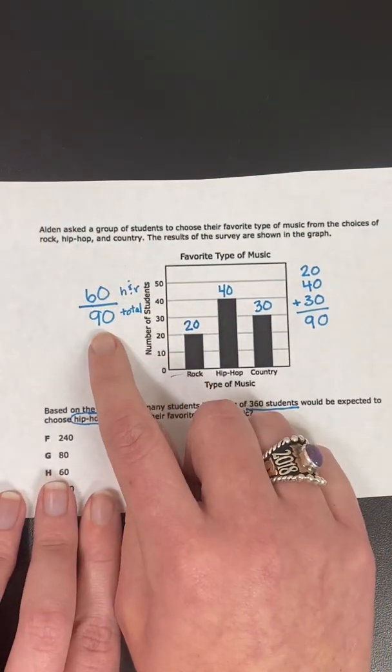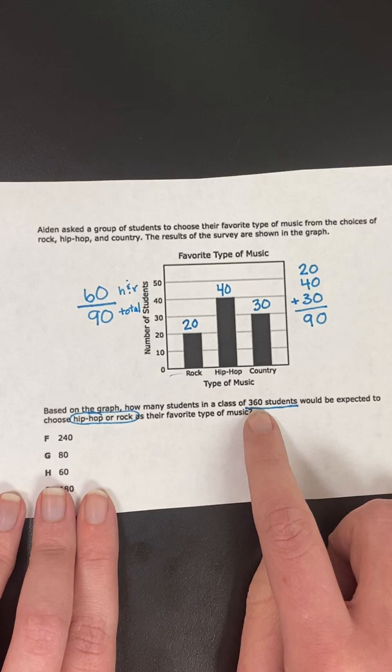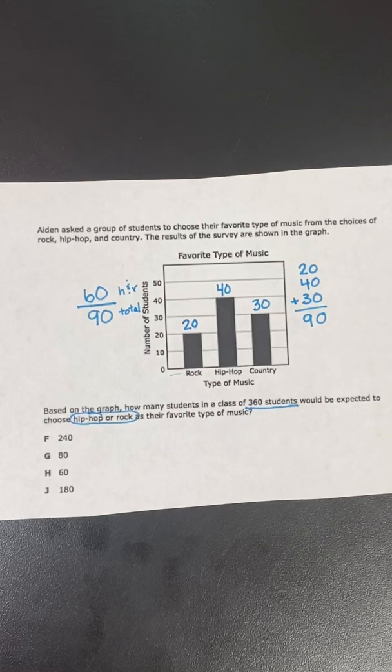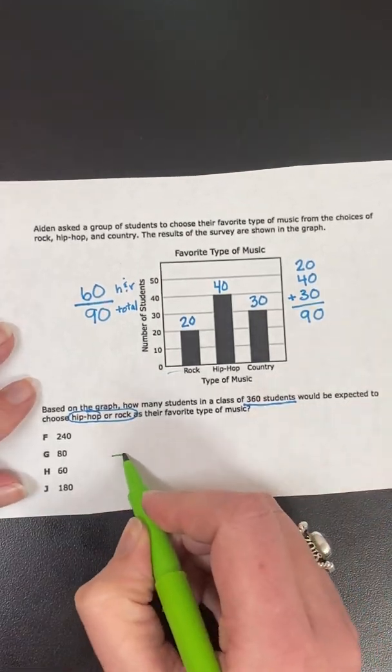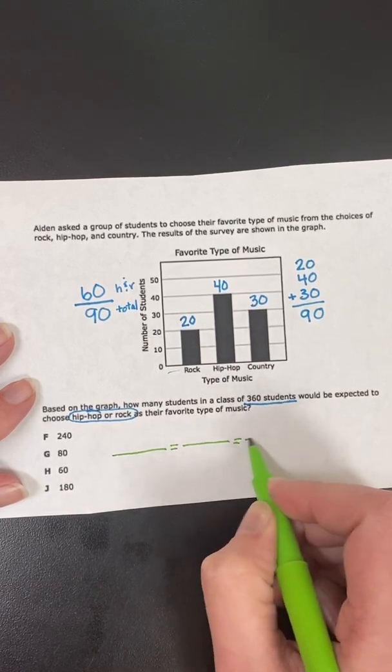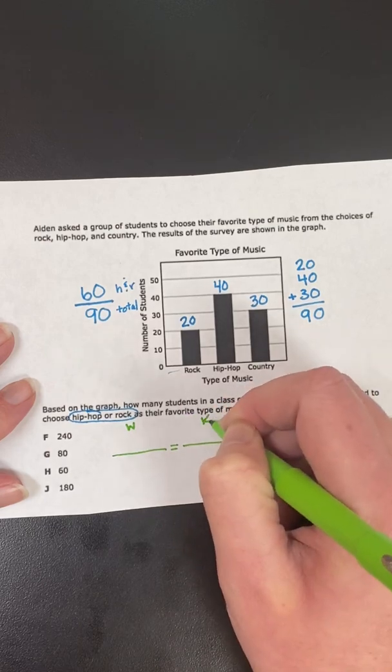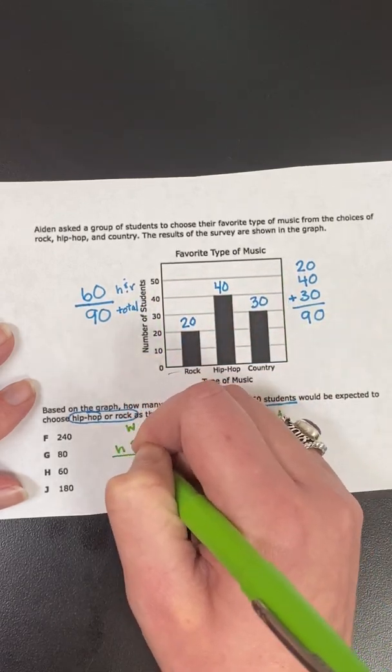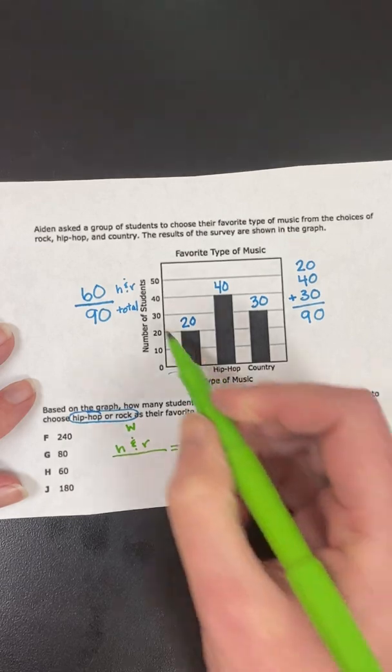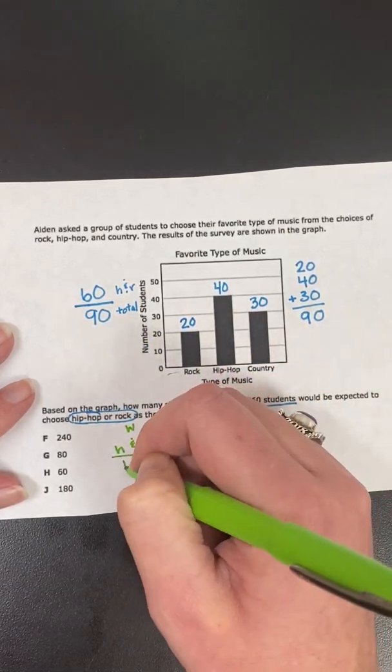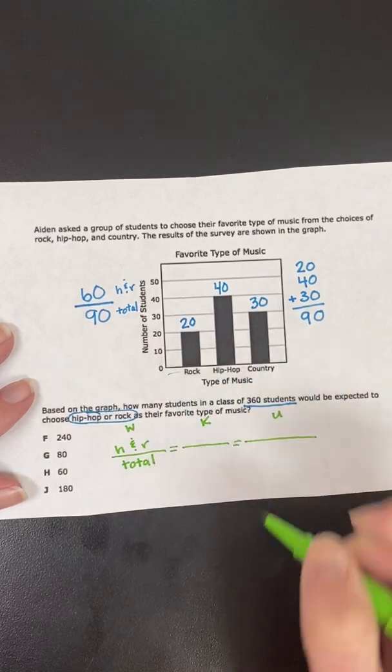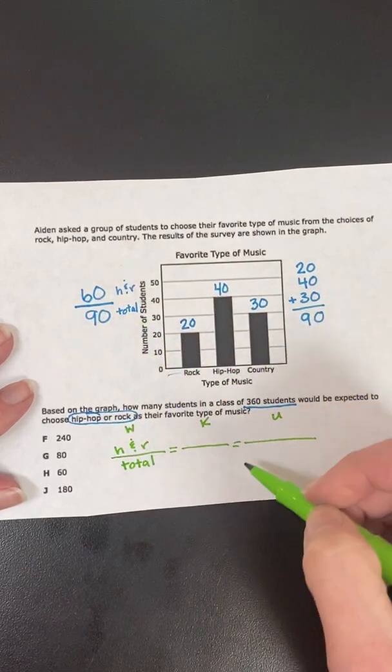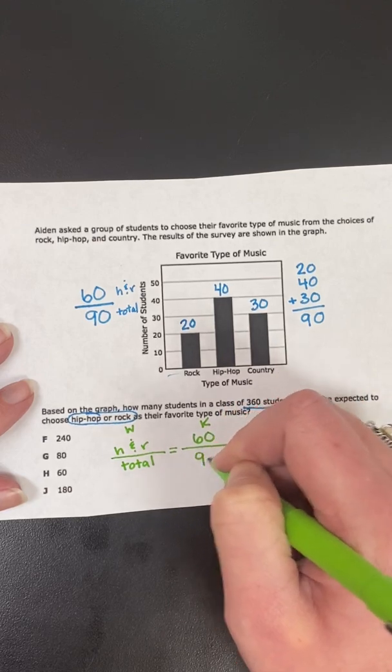So we know 60 out of 90 would like hip-hop or rock. But we want to know, if I did have 360, how many people would like that? So in this situation, I could set up a WKU proportion. So I'm going to go ahead and set that up down here. And we know we have our WKU. So I'm going to start with my words. We know we have hip-hop and rock. I'm just going to use H and R for short. And then again, we know we have on the bottom, always on the bottom, we have our total. Total goes on the bottom. So we already have our known. We know that 60 people out of a total of 90 would choose hip-hop or rock. So our 60 and our 90 goes here.